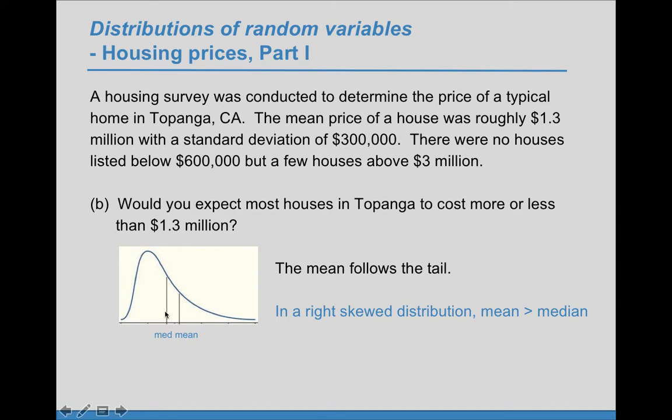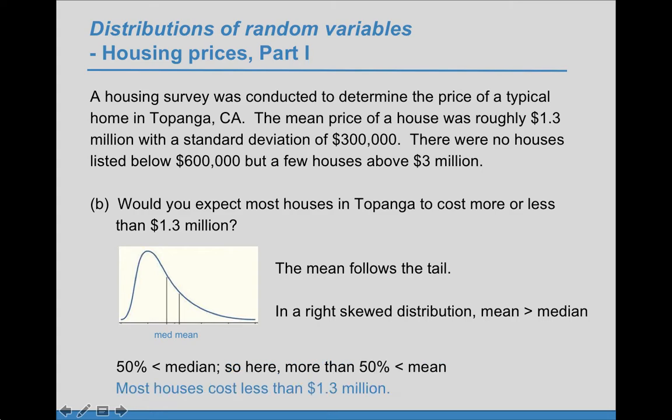And now we know that 50% is below the median and 50% is above the median. So if 50% is less than the median and the mean is up here, then somewhat more than 50% must be less than the mean. And so most houses cost less than $1.3 million as opposed to more.